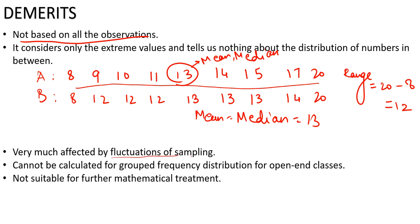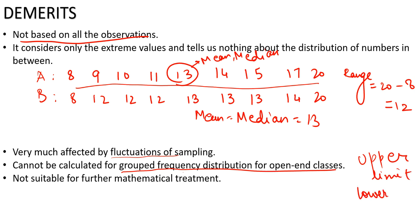Second demerit: range is very much affected by fluctuations of sampling. If we pick different samples from a population, the range values can differ quite a lot. Third, range cannot be calculated for grouped frequency distributions with open-ended classes, because we don't know the upper or lower limits. Fourth, range is not suitable for further mathematical treatment, as it is generally not used in any mathematical calculations beyond the coefficient of range.